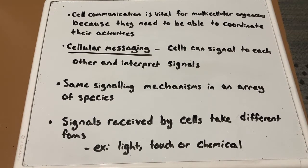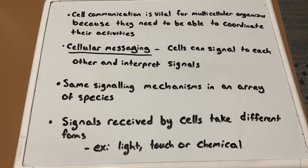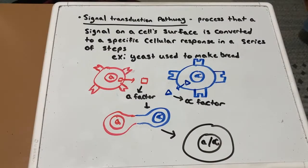For example, it is seen in embryonic development, hormone action, and even cancer. Signals received by cells take different forms, such as light, touch, or chemical signals. However, signals are usually chemical signals. A signal transduction pathway is the process by which a signal on a cell's surface is converted to a specific cellular response in a series of steps.